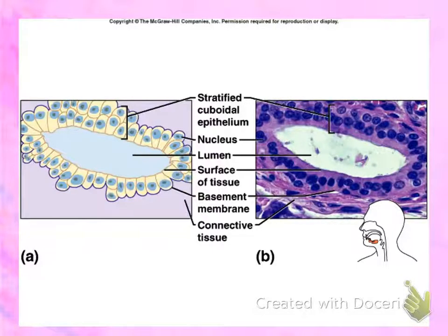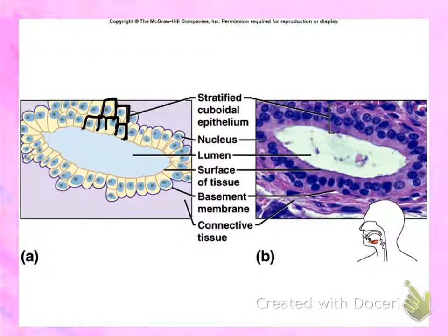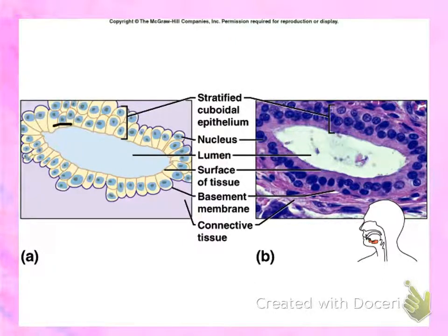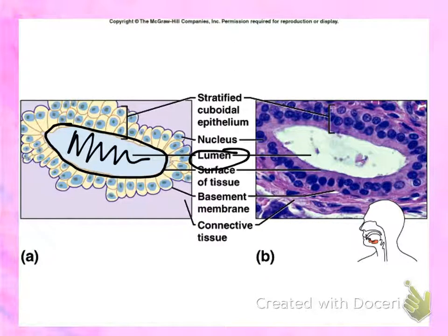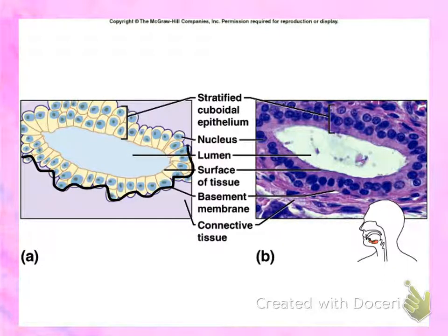This is stratified cuboidal epithelium found in the salivary glands, which is an exocrine gland. Exocrine glands secrete materials out of the body. Note the multiple layers — you see two layers of cells, which is why it's called stratified. The cells are cube- or square-shaped with round nuclei, therefore it is stratified cuboidal. The outline in the middle is your apical surface, and the space inside the apical surface is the lumen. The basement membrane attaches the stratified cuboidal to the connective tissue.